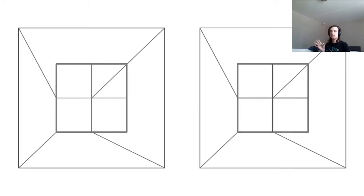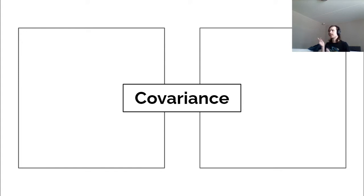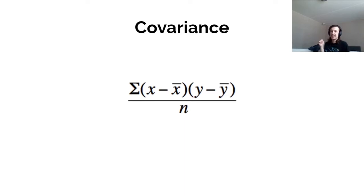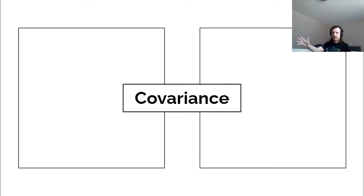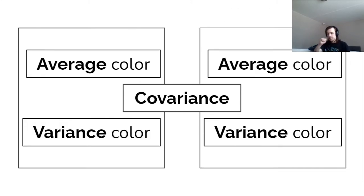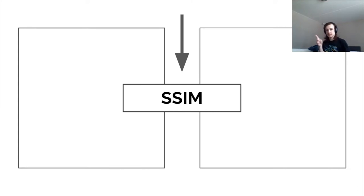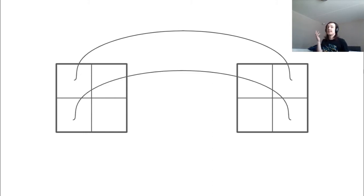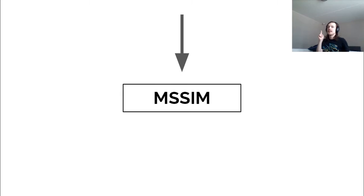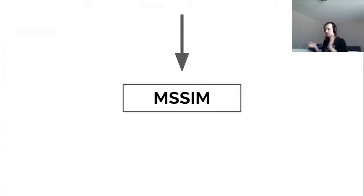The next step is to take two separate windows, and between these two windows we can calculate the covariance. The covariance is very similar to the variance, except now we're comparing how varied two windows are from each other — defined by this formula. Once we have the covariance, we combine it with the average and variance color of each image, and shove it all into a formula which outputs the structural similarity index value between these two windows. Once we've done that for all windows, we take the average of all those values and get the final value: the mean structural similarity index — the similarity between the images. That's the algorithm.